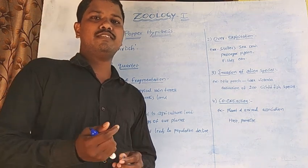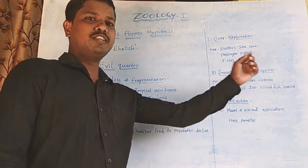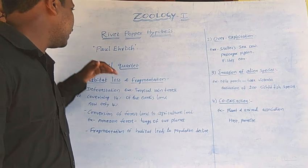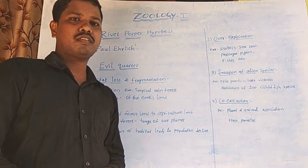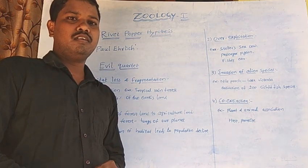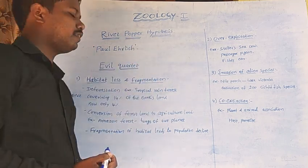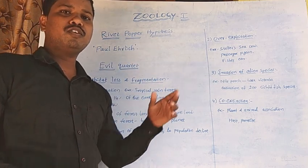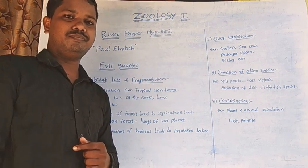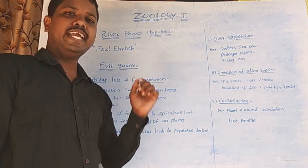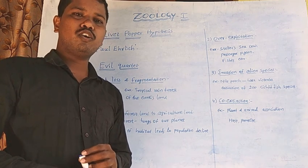In this session I am going to explain about the Rivet Popper Hypothesis. The Rivet Popper Hypothesis was proposed by Paul Ehrlich. He takes an aeroplane as an analogy for an ecosystem.